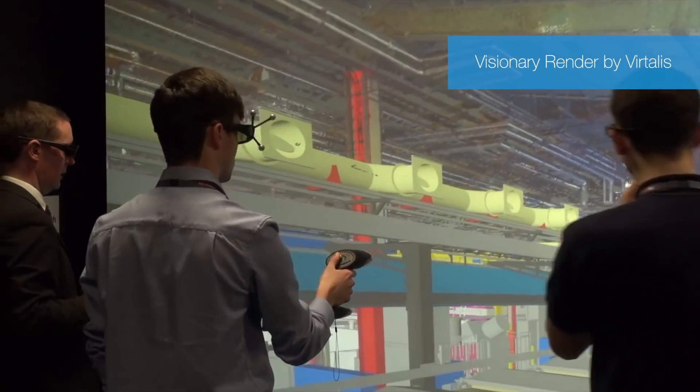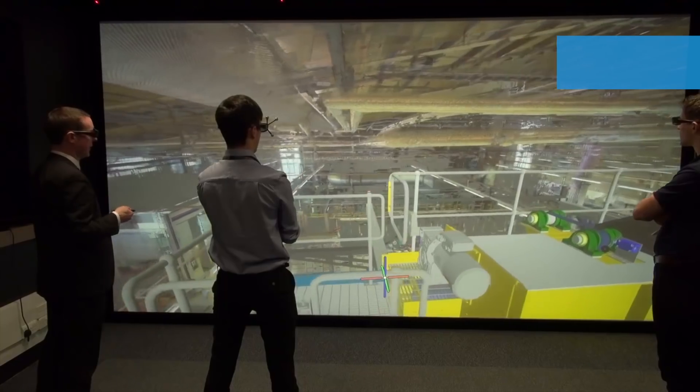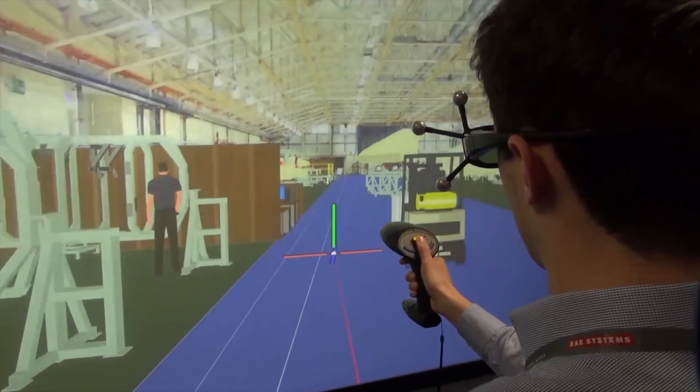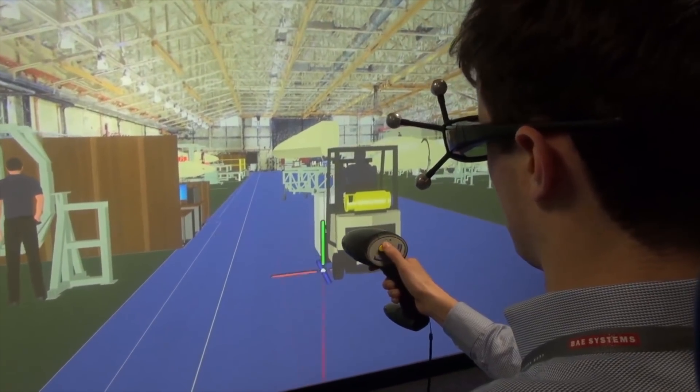Companies like Vertalis have integrated Hoops Exchange within Visionary Render to rapidly transform CAD models into 3D for headsets, caves and massive display walls.